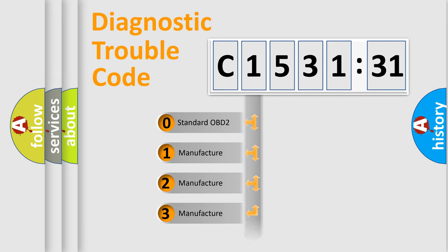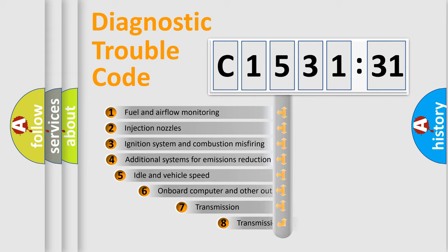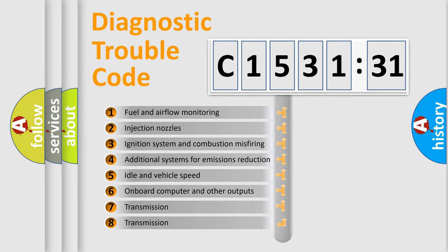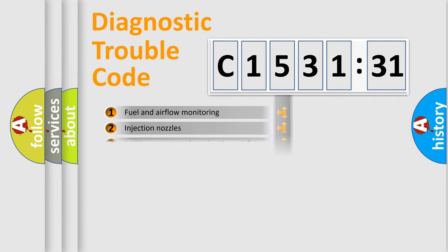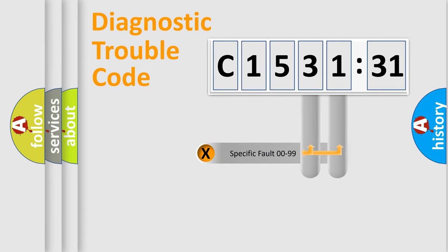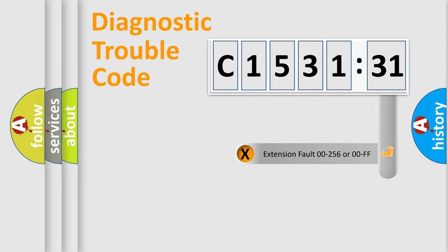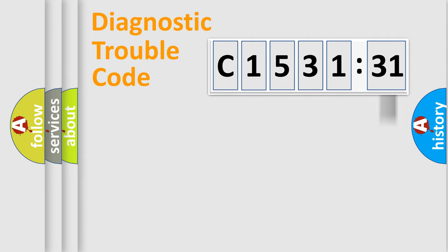If the second character is expressed as zero, it is a standardized error. In the case of numbers 1, 2, or 3, it is a more manufacturer-specific expression of the car-specific error. The third character specifies a subset of errors. This distribution is valid only for the standardized DTC code, and only the last two characters define the specific fault of the group.